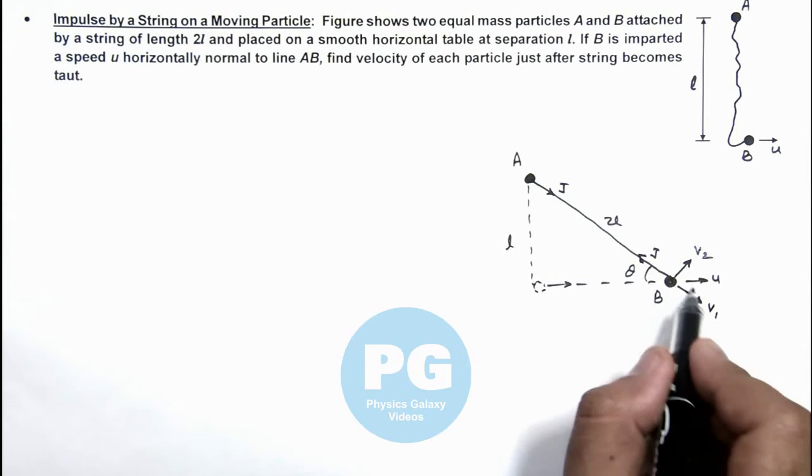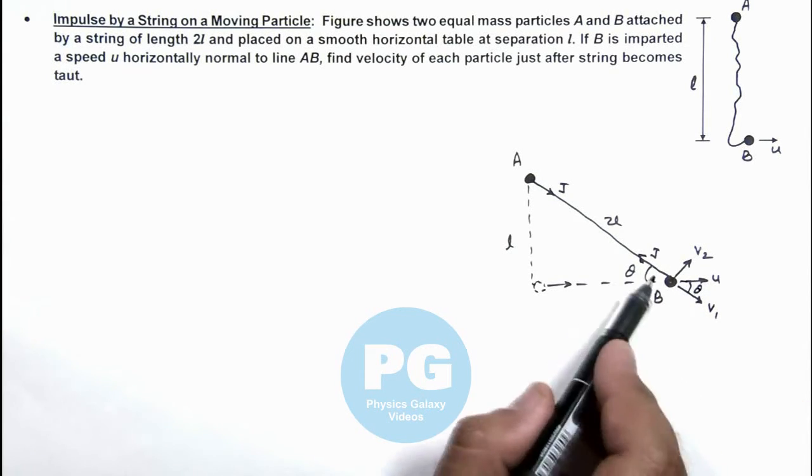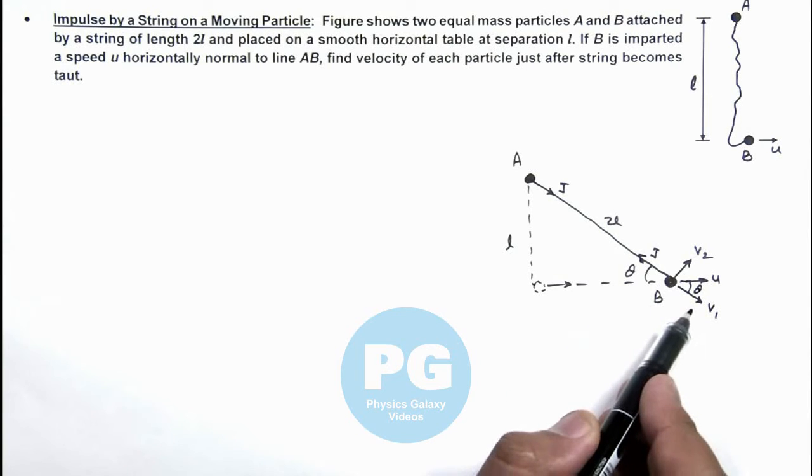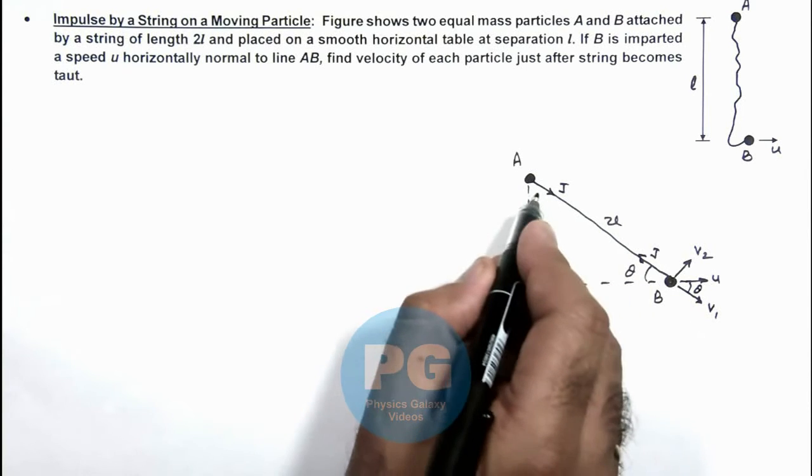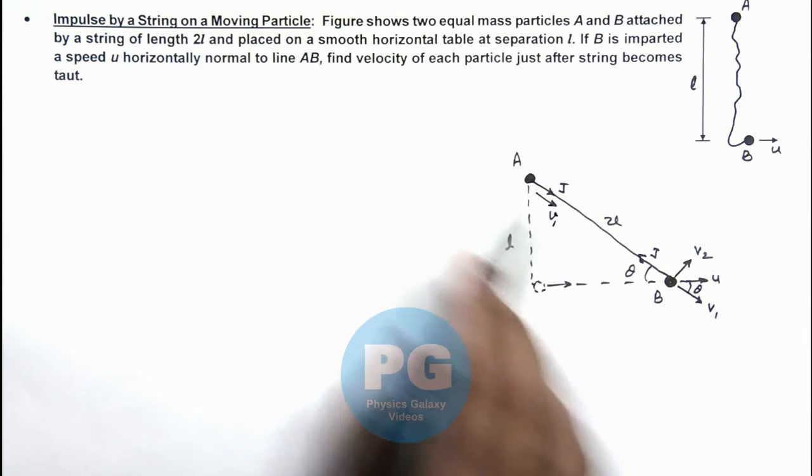And here we can see if this angle is theta, this is also theta. So this impulse will change the velocity component along the length of string, and when it becomes tight ball A also moves with the velocity v1 just when it becomes tight.